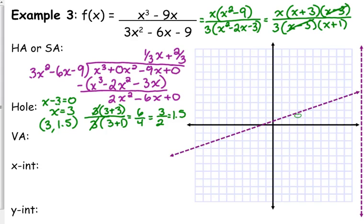Vertical asymptote. We are left with 3 times x plus 1 in the denominator. So we have a vertical asymptote at x equals negative 1. Dash line at x equals negative 1.